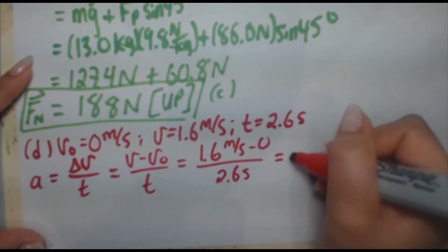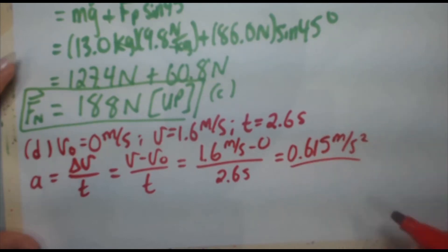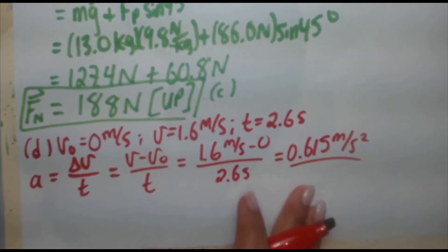And you're going to get acceleration to be 0.615 meters per second squared. Okay, so that's going to help us quite a bit. We're trying to find what force the person exerts on the lawnmower.